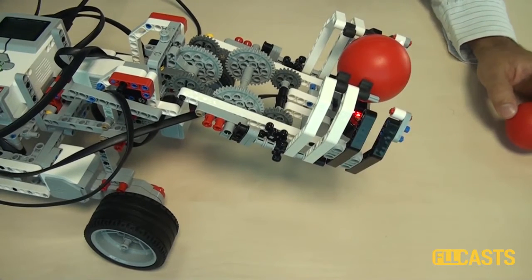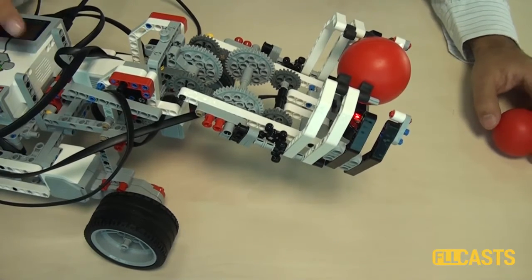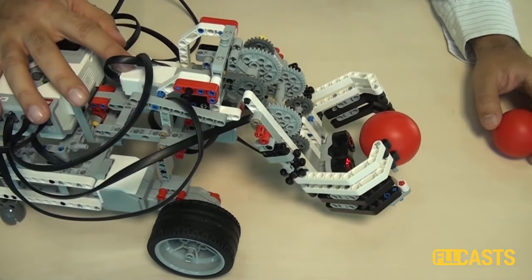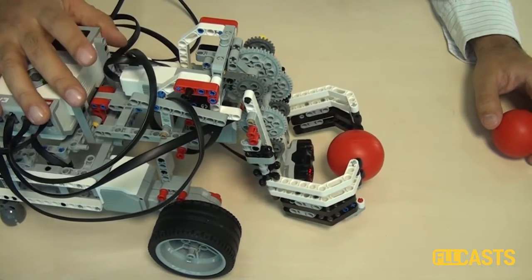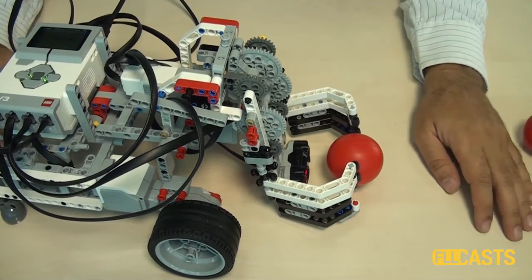We can then lower and leave the ball. We just turn the medium motor in the opposite direction. Okay, let's try and see how this works on the field.